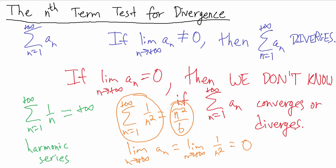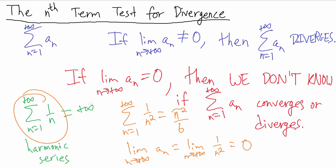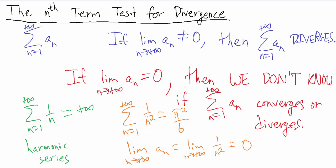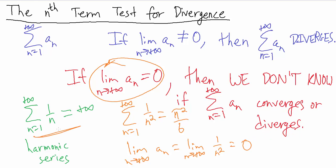To actually find this value requires math more advanced than Calculus 2, but using Calculus 2 techniques you can show that it does converge. The point is that this series converges to a finite value, pi squared over 6, while the harmonic series does not converge — it diverges to positive infinity. Both sequences have a limit of 0, yet one series converges and the other diverges, showing that knowing the limit of the sequence is 0 doesn't tell you anything about the series.